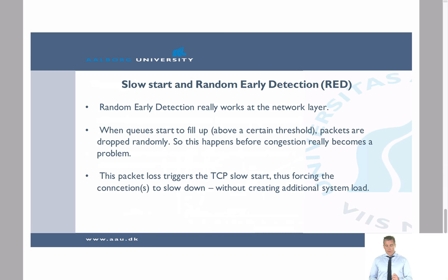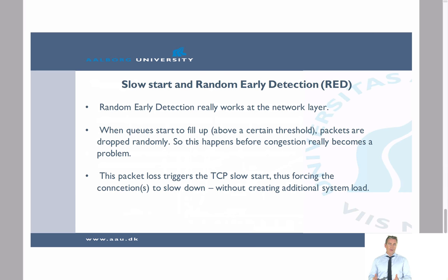The idea is to drop packets randomly based on queue length. Once the queue exceeds a certain threshold, the larger the queue, the higher the probability of dropping a packet. This random dropping triggers TCP slow start and forces connections to slow down without creating additional system load — allowing us to address a potential congestion scenario at an early stage.